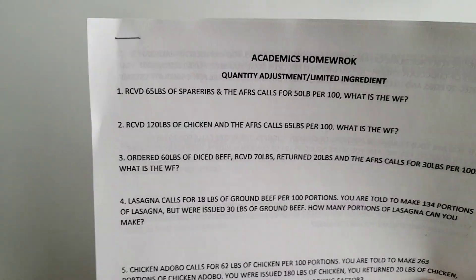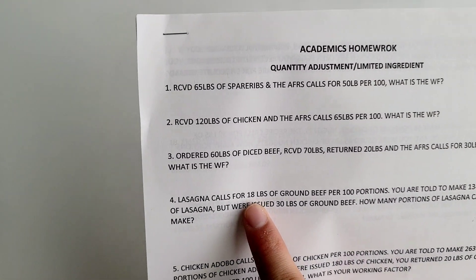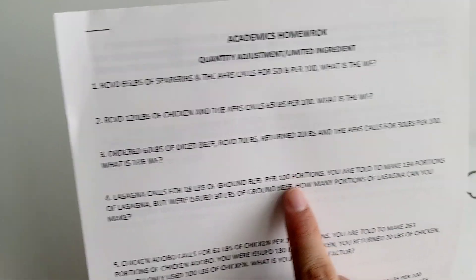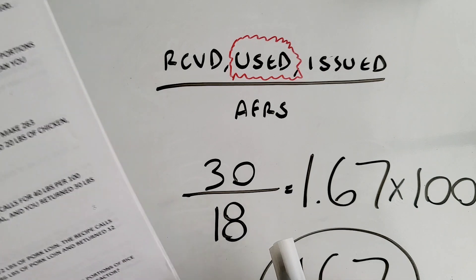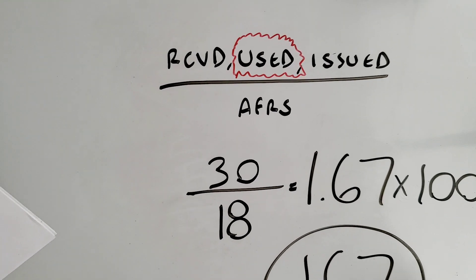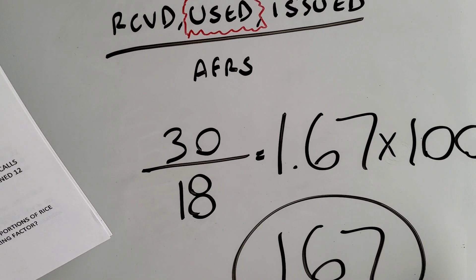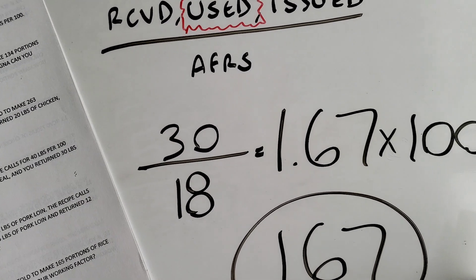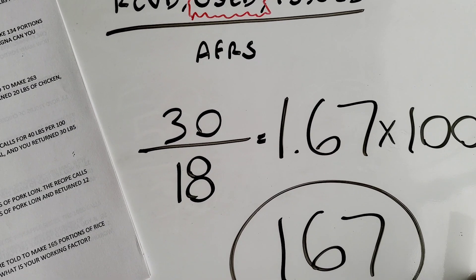So essentially, with 18 pounds you can make the 100 portions, and with the 30 pounds that you were issued, you can make 167 portions.